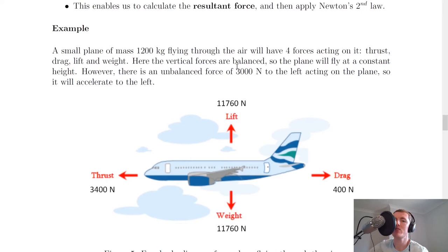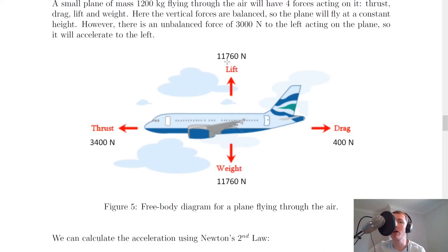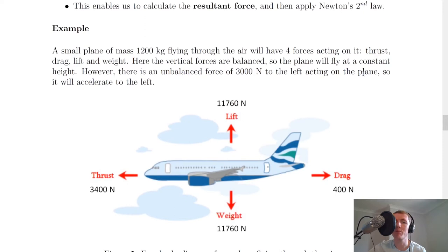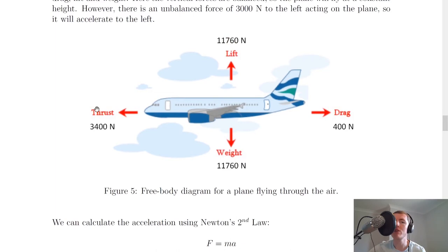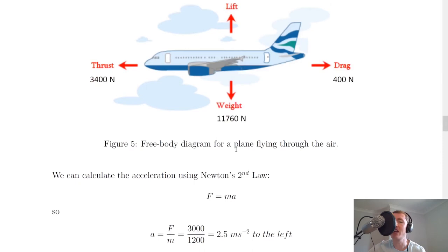And it says here the vertical forces are balanced, so the plane will fly at a constant height. So you can see on our labelled free body diagram, we've got 11,760 newtons upwards and 11,760 newtons downwards. So the plane is not going to move upwards or downwards, in this case it's going to stay at a constant altitude, a constant height. However, there is an unbalanced force of 3,000 newtons to the left acting on the plane, so it will accelerate to the left. So in this case you should be able to see that we've got 3,400 newtons to the left from the thrust and 400 newtons dragged to the right. So the overall unbalanced force will be 3,000 newtons to the left, which means that the object will accelerate to the left.